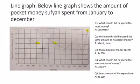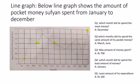Question number four: which month did he spend the least amount of money? In January he spent only 100 rupees, which is the least expenditure from his pocket money. Question number five: the least amount of his expenditure is 100 rupees.